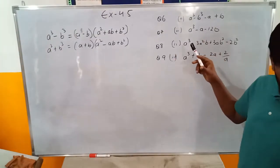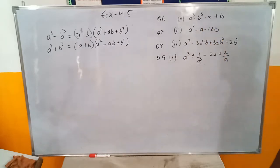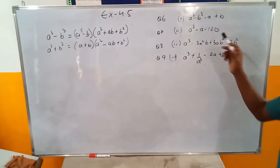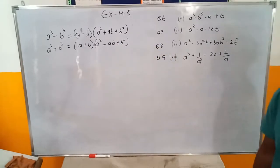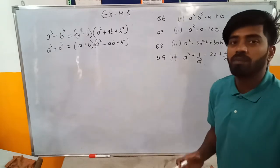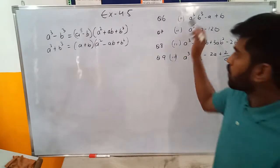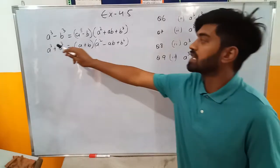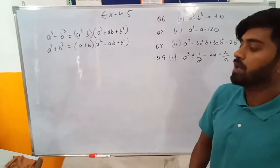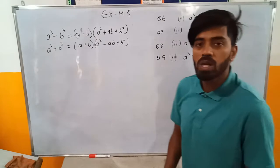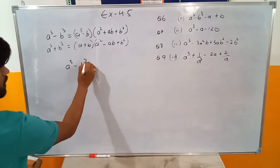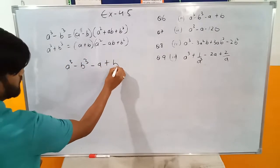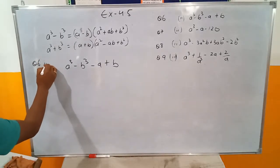In all these questions you will notice they have terms in plus-minus form, and I need to bring them down into brackets so I can have them in product form — the factorized form. Let's start solving. Question number six, second part: a cube minus b cube minus a plus b.